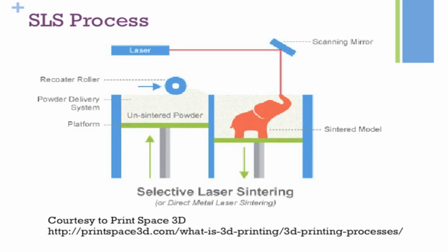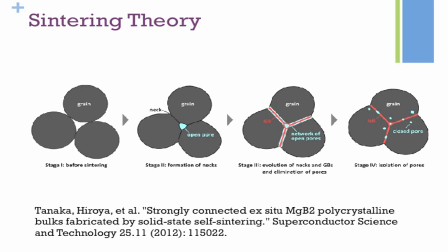Moving on to the sintering theory, normally there are a few stages. The first stage, before sintering, the powder is usually heated up to about 0.7 or 0.8 of the melting point of the powder, so that a lesser amount of power is required by the laser to sinter the powder together. Next, once it is heated up, stage 2 — necking occurs, meaning formation of a neck. The powder grains will try to stick to one another.